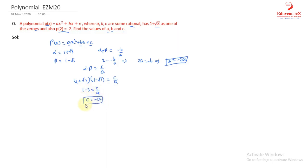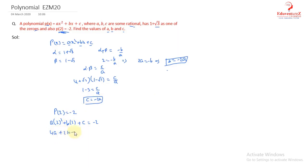So b = −2a and c = −2a. Now we use the condition p(2) = −2. Since p(x) = ax² + bx + c, we get p(2) = a(2)² + b(2) + c = −2, which gives 4a + 2b + c = −2. Substituting b = −2a and c = −2a: 4a + 2(−2a) + (−2a) = 4a − 4a − 2a = −2a = −2.